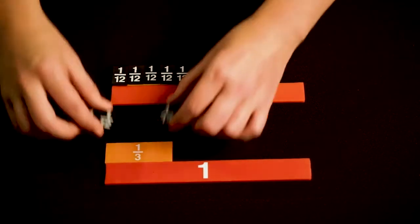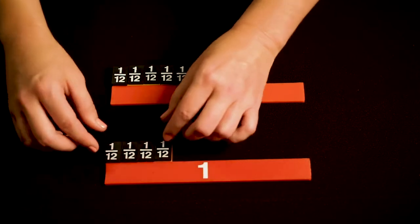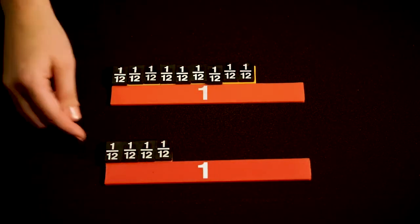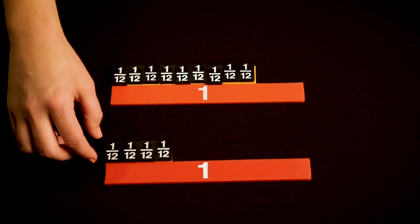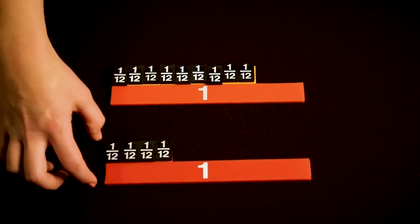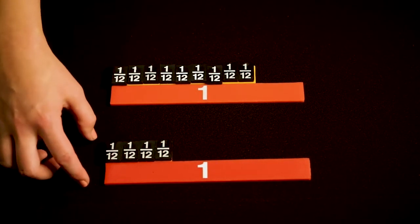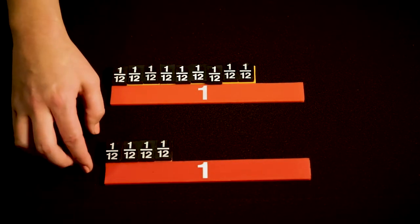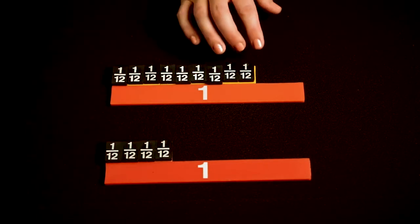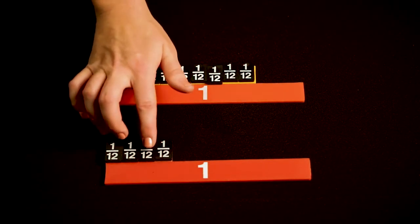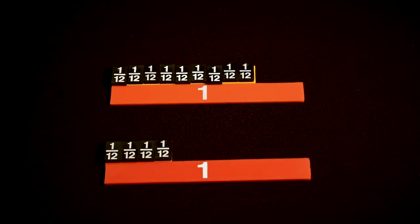And 1 third in twelfths, 3 times 4, so I break that into 4 equal pieces, equals 4 twelfths. So I'm going to leave this here, not going to do anything with it. I'm just going to use this for my reference, that we need to take away 1, 2, 3, 4 of the 1 twelfth pieces.